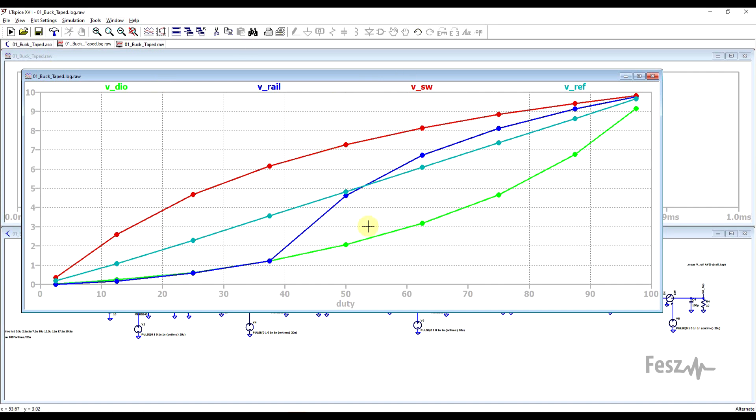So switch tapping is pushing our graph upwards, for the same duty cycle we are getting larger voltages. Diode tapping in green pushes the graph lower, we are getting lower voltages for the same duty cycle. And while rail tapping does a bit of both, for duty cycles below 50% it provides smaller voltages, and for values above 50% it provides larger voltages.